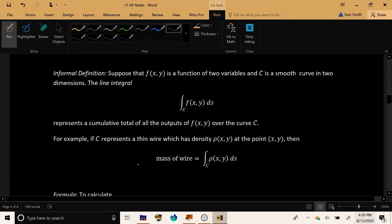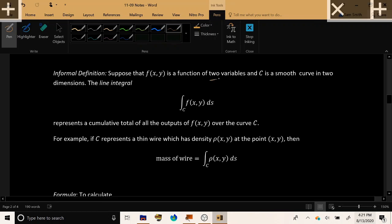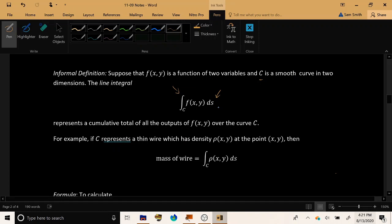So let's informally define a line integral. To begin with, you have some function f of xy, a function of two variables. And then you have some smooth curve, let's call it c, which lives in two-dimensional space, as in the drawing that we gave on the previous page. The line integral is indicated by a single integral symbol and a single closing ds on the right-hand side, with a subscript corresponding to the curve c. And then we have our function f of xy as the integrand. This quantity represents a cumulative total of all the outputs of f of xy over the curve c.